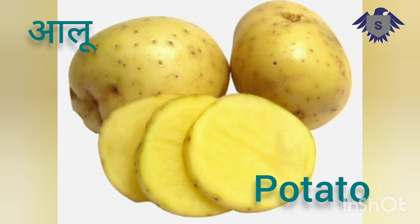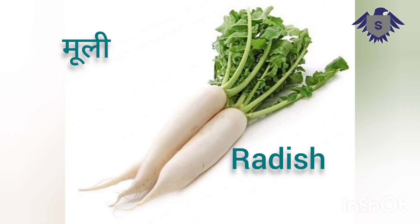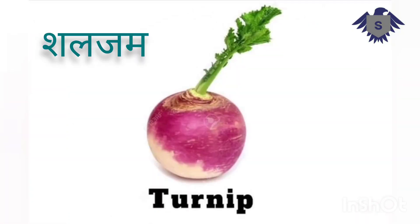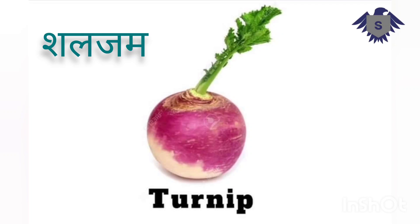Potato — Aloo. Radish — Mooli. Turnip — Shaljum. Chili — Mirch.